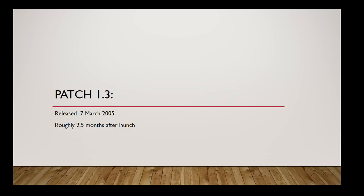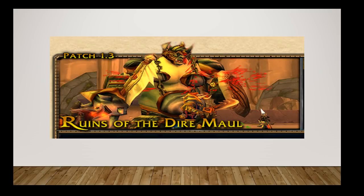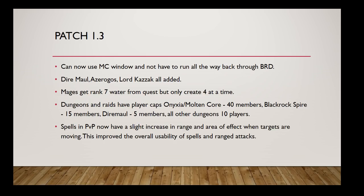Patch 1.3 came about two and a half months after launch. Pre-1.3, if you wiped in Molten Core you had to run back through BRD. This patch added the Molten Core window — because that was insane. Going through BRD was terrible because stuff would respawn in the time it took, meaning you'd have to re-clear BRD just to go back to Molten Core, which of course would have respawned again. Now you can just go through the window, which made things a lot easier if you died.